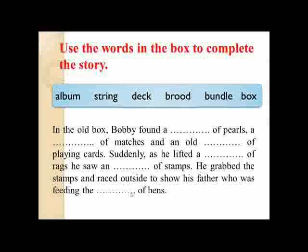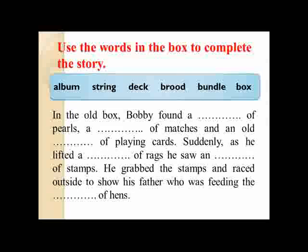I hope you could find the answers — let's check them. In the oil box, Poppy found a blank of pearls. What is the correct one? A string of pearls. And a blank of matches — so what is the correct collective noun used with matches? A box of matches. And an odd blank of playing cards — what do you call a set of cards? A deck of playing cards.